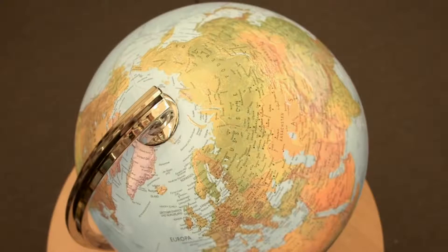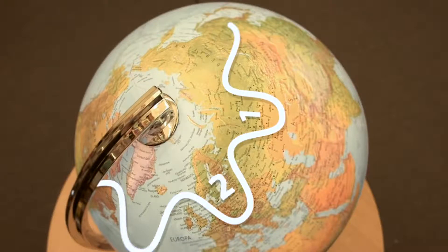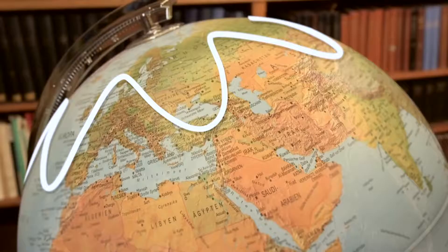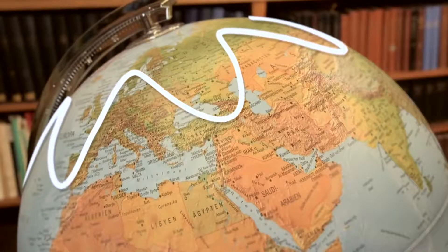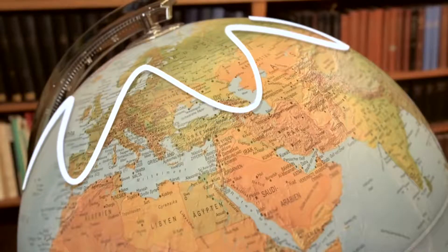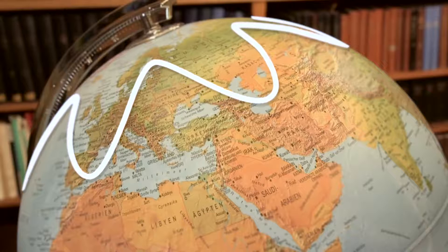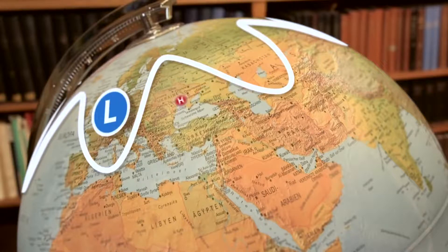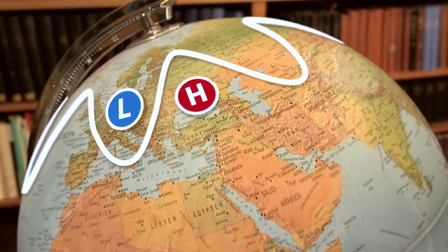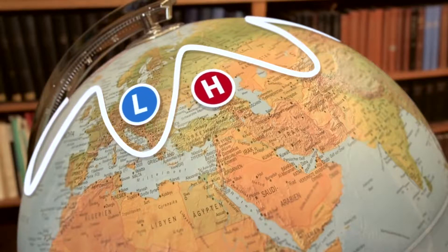Their wave number is about 6 to 8, meaning that 6 to 8 wave cycles fit around the globe. Normally, these waves move eastward, which means that weather systems move too.